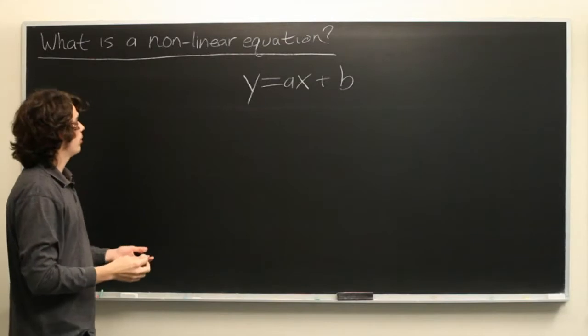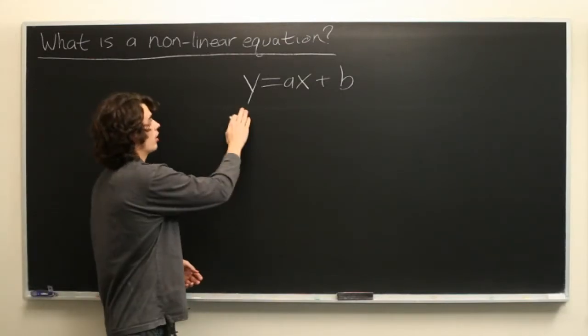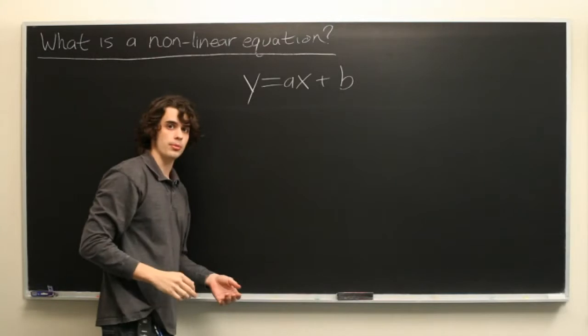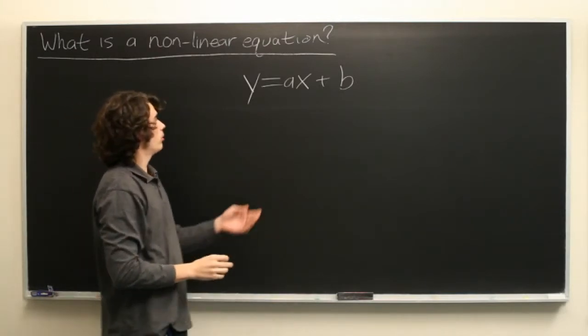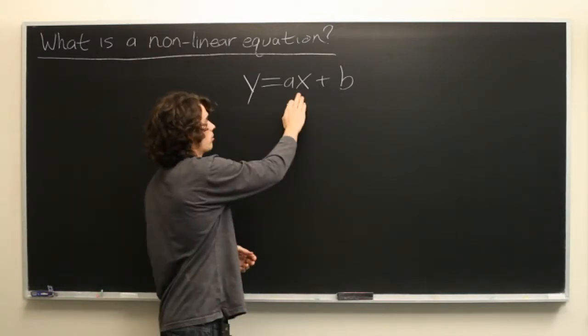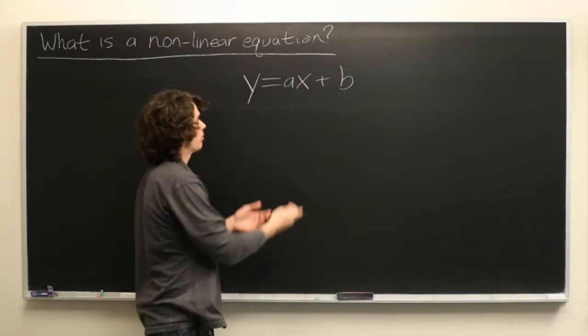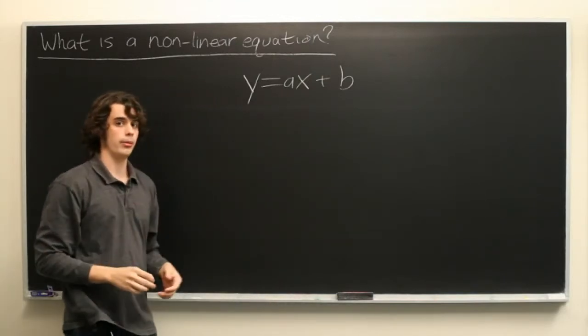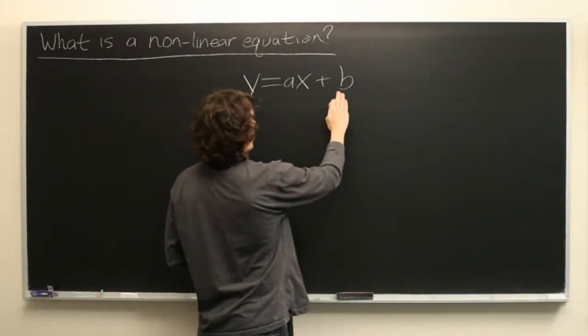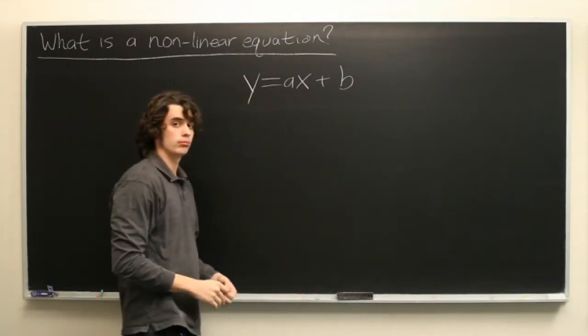Most simply put, a linear equation is an equation which relates two variables, in this case y and x, where the only terms are x raised to the first power, possibly with a coefficient which we'll call a, and possibly a constant which we'll call b, and that's all there is to it.